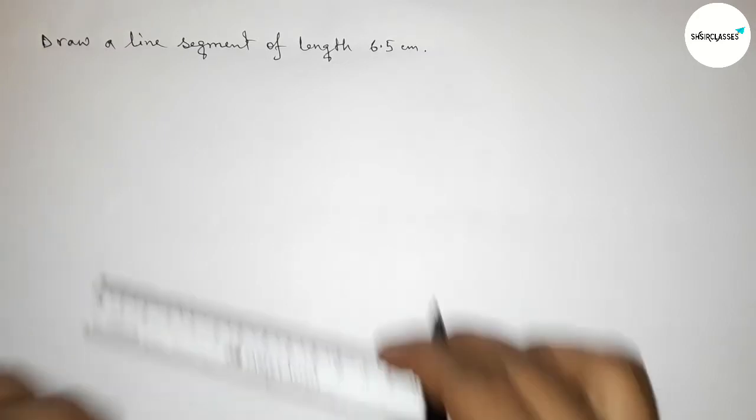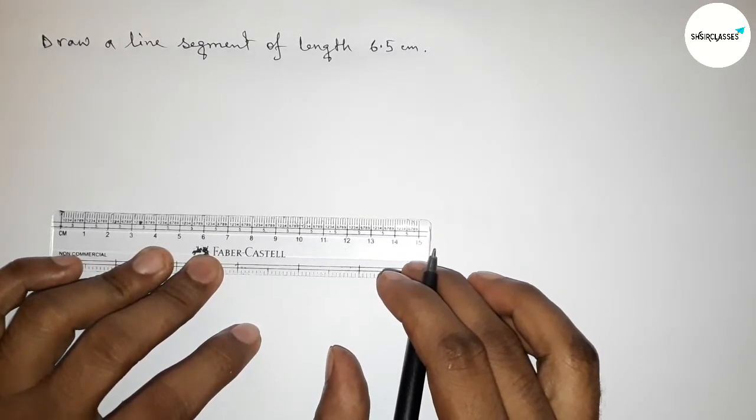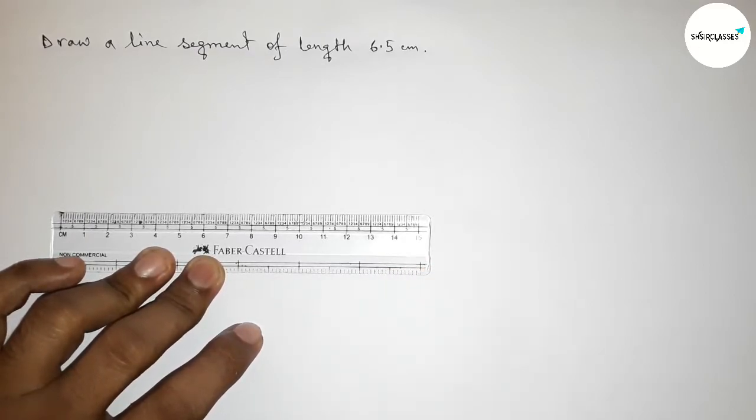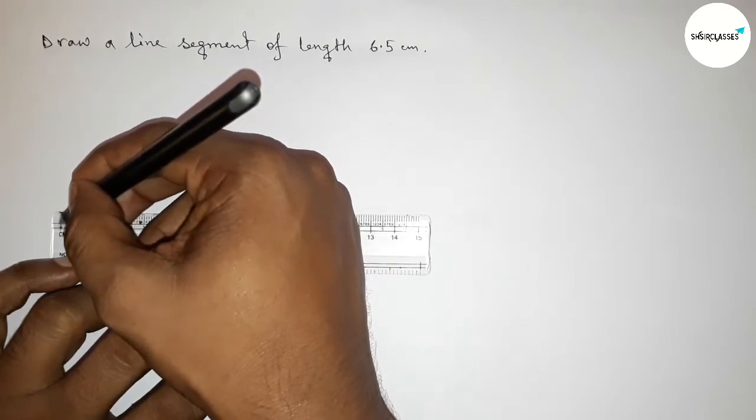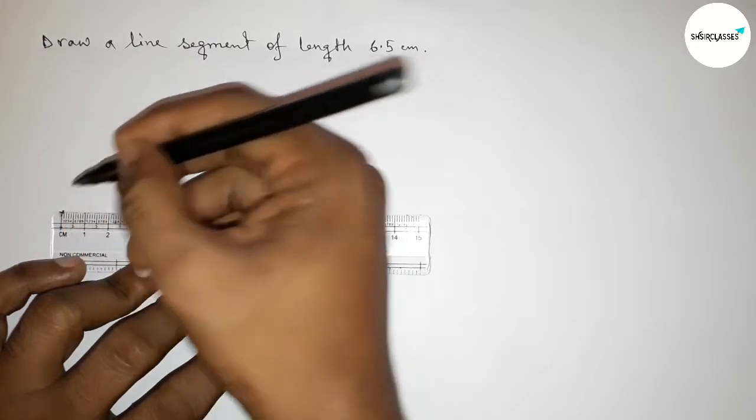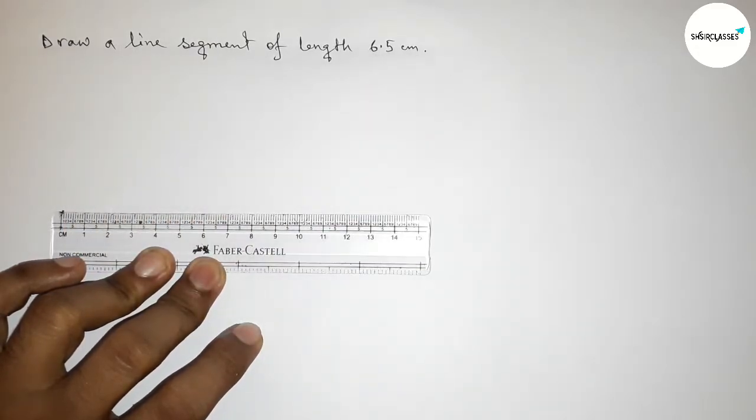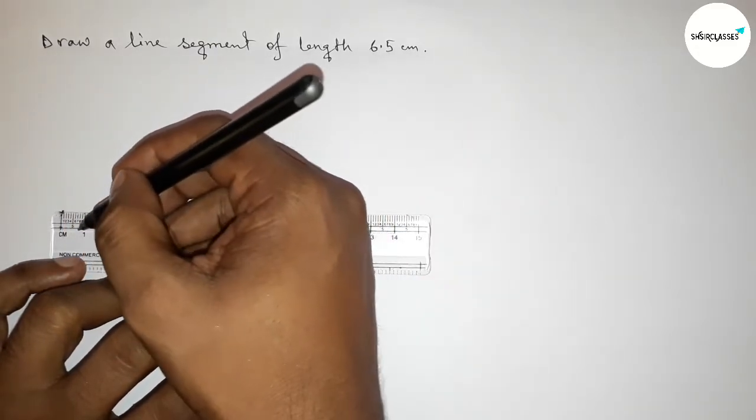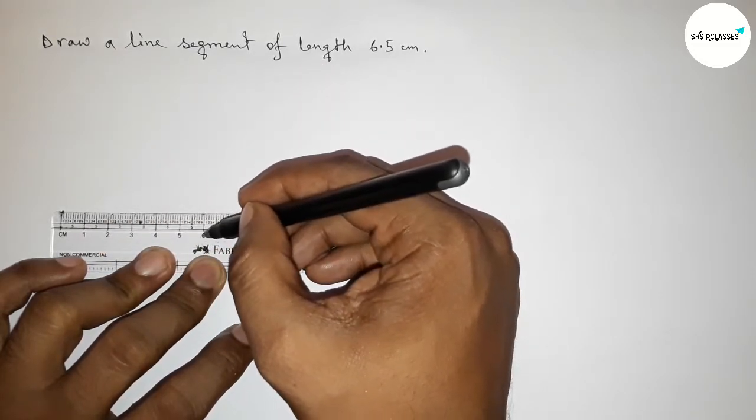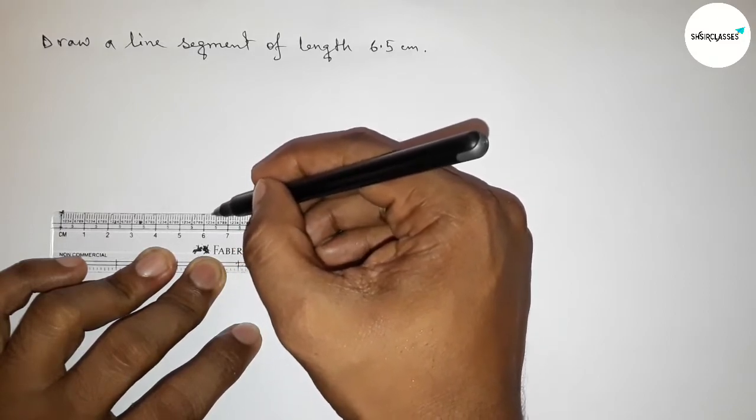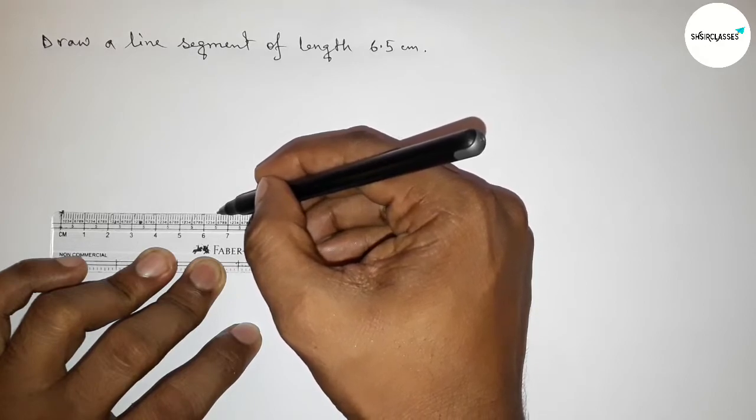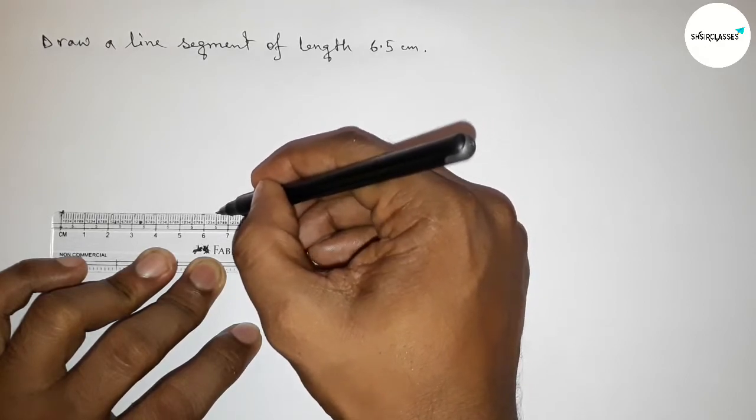So first marking here, this is starting zero. So first mark here zero. Next counting, so this is zero, one centimeter, two centimeter, three centimeter, four centimeter, five, six, and this is six point five centimeter. So first we have to mark six point five centimeter length here.